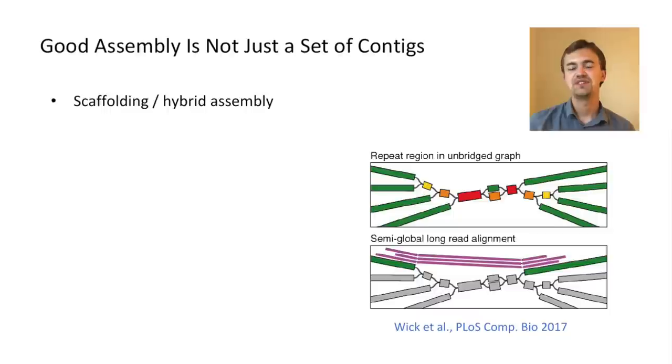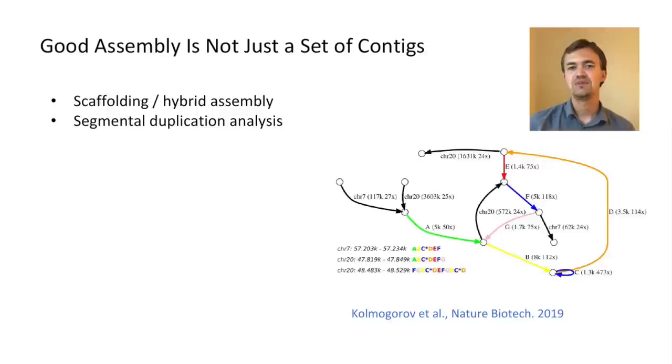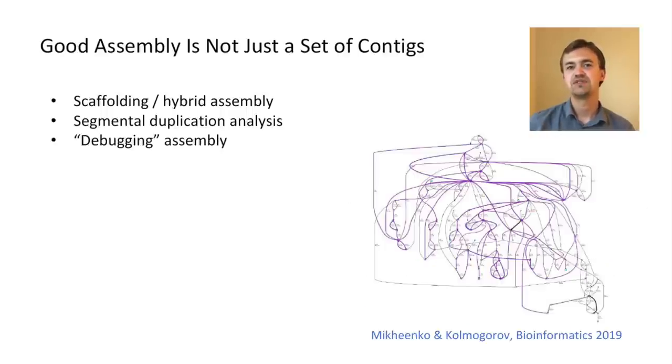And I will try to convince you that a good assembly is not just a set of contigs, but assembly graphs also carry a lot of useful information. Just a few examples of how the graph can be used. For example, it could be used for scaffolding or hybrid assembly. It could be used for structural variation analysis and analysis of the repeat content of your genome.